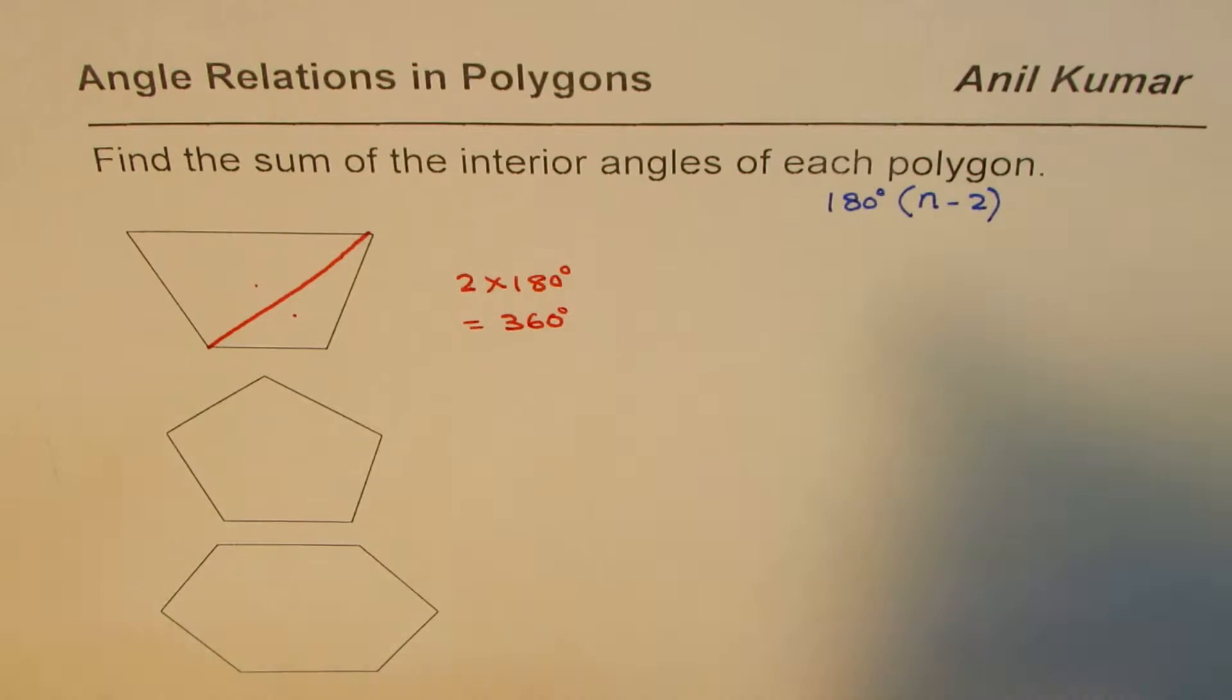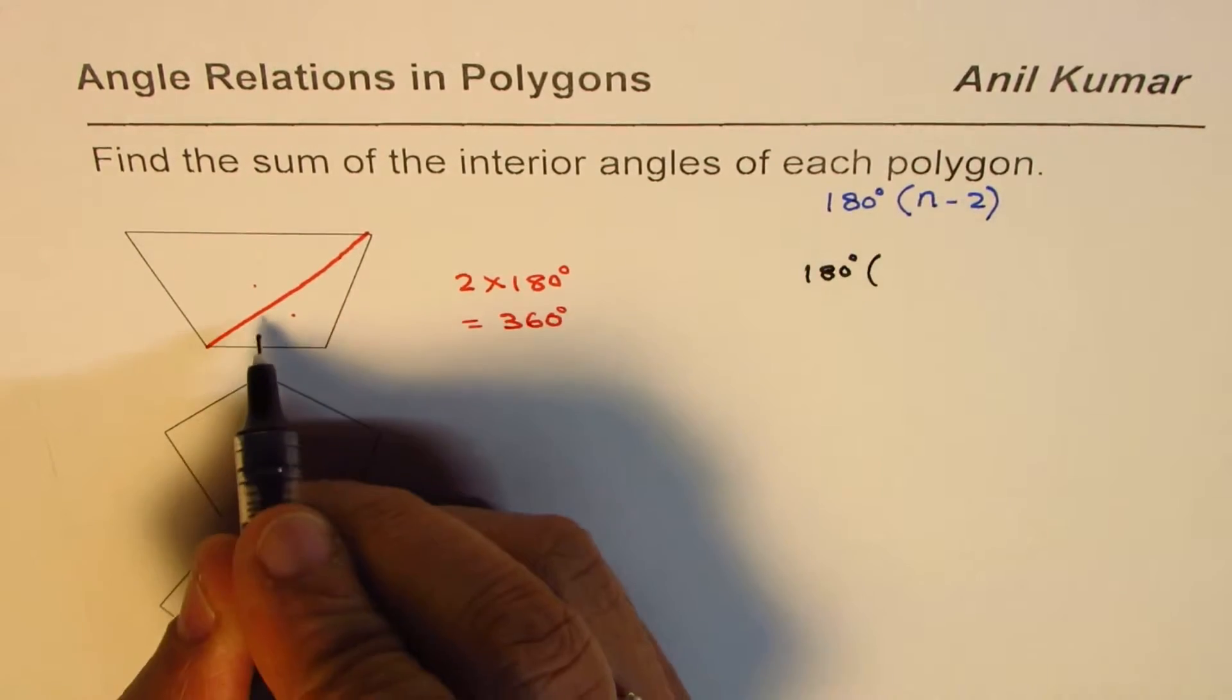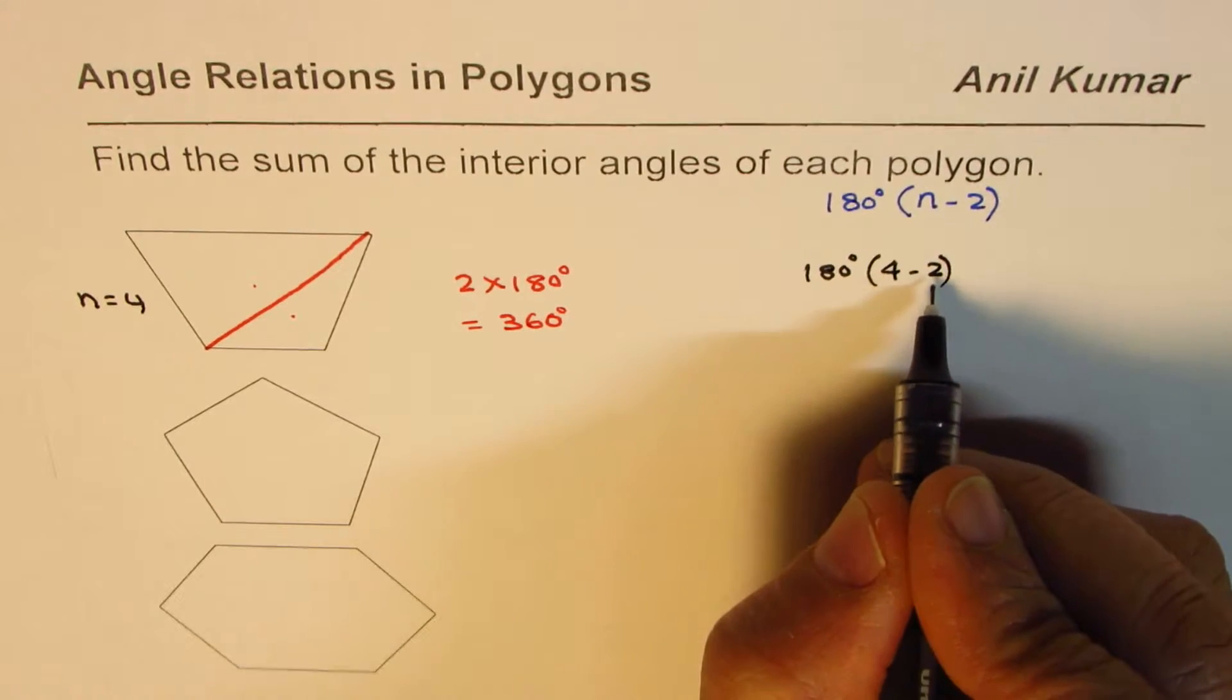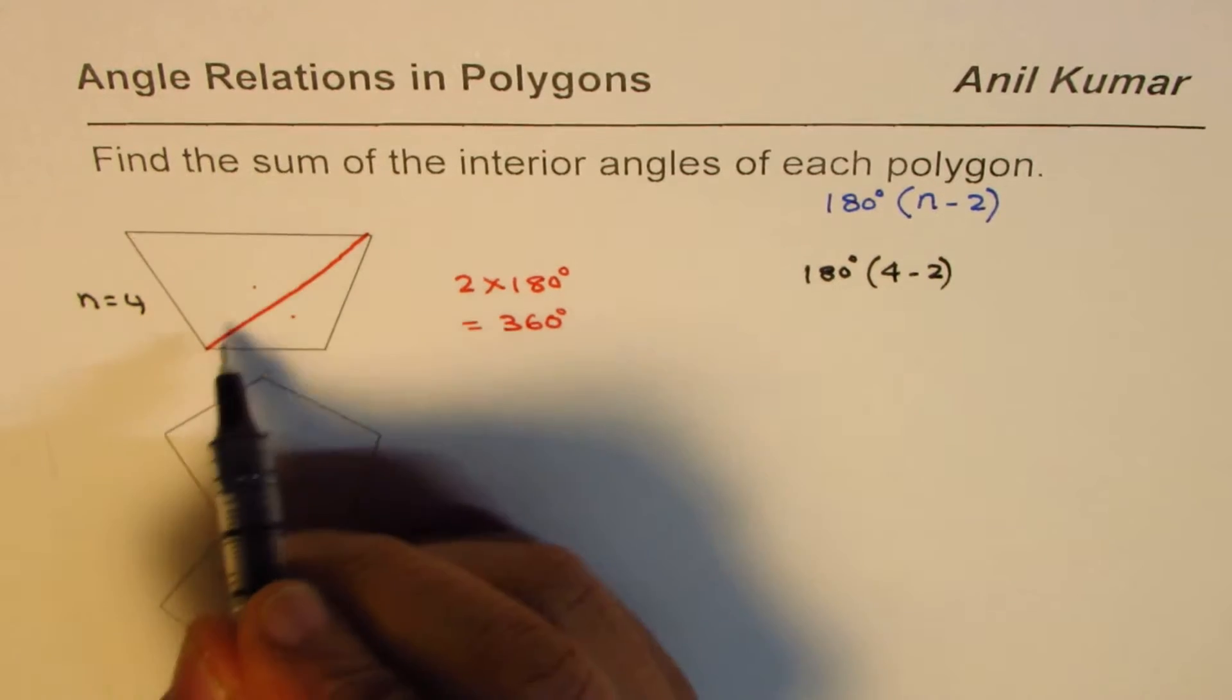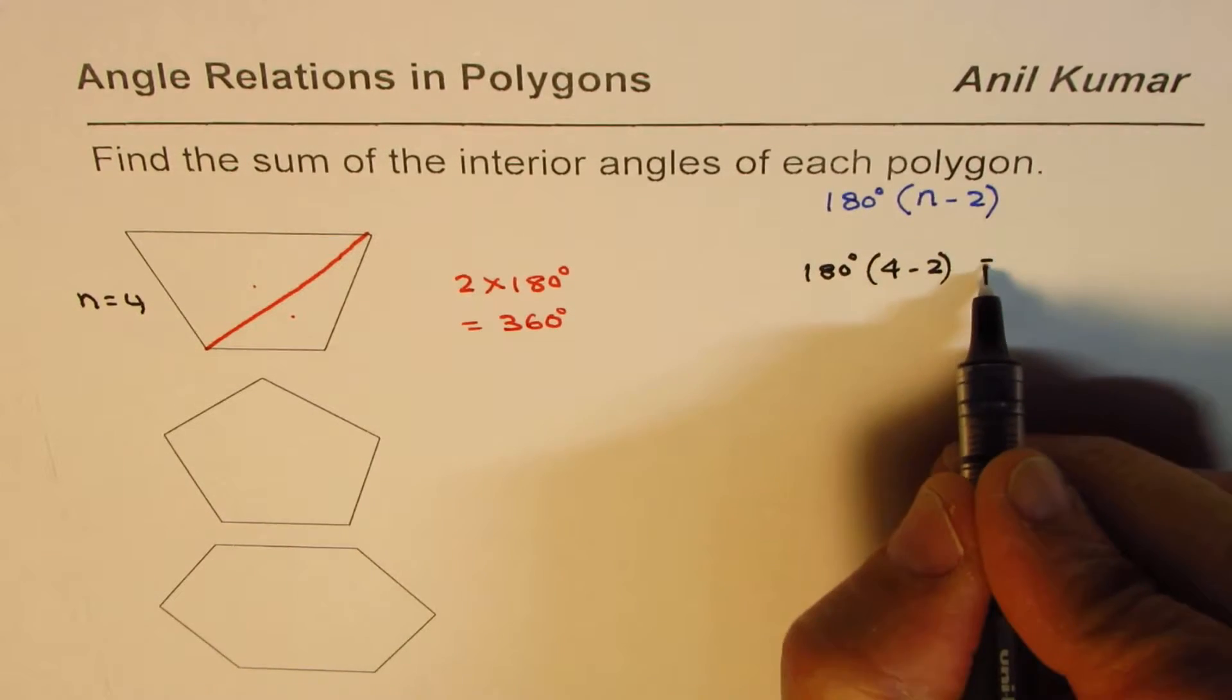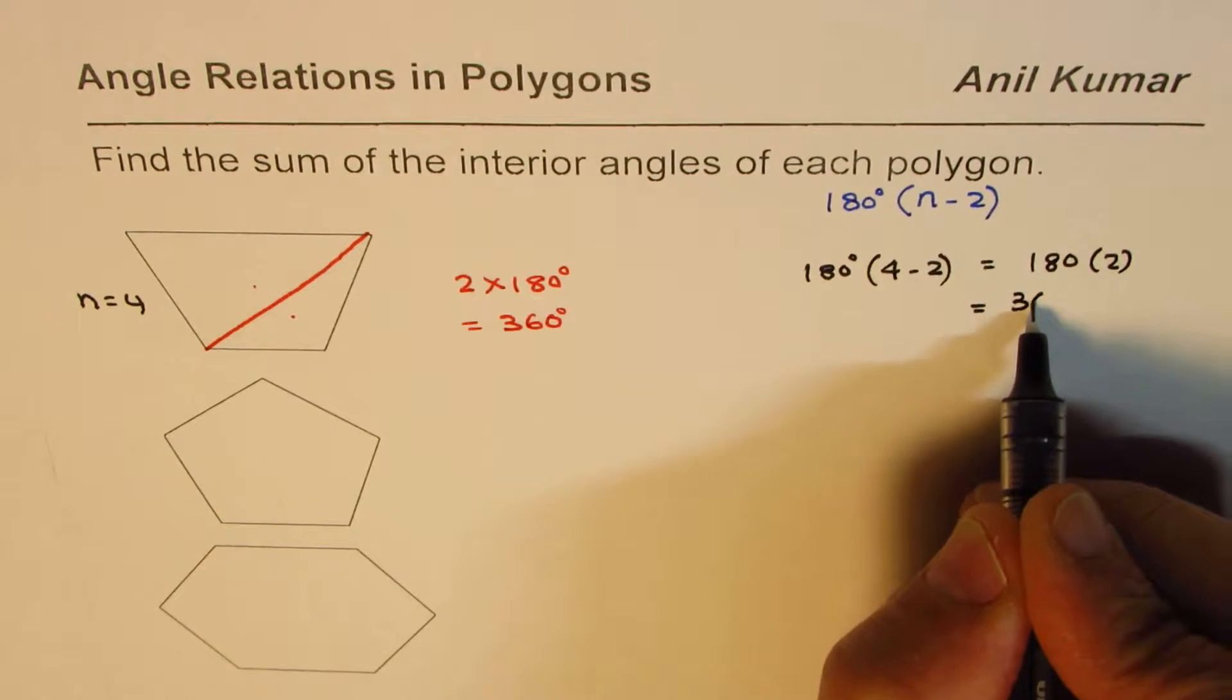Now let me apply this formula. The sum is 180 degrees times n. n equals 4 in this case, so 4 minus 2. The expression n minus 2 gives you the number of triangles. Two sides and then the third makes one triangle, so the number of triangles is 2 less than the number of sides. That gives you 180 degrees times 2, and you get the same result: 360 degrees.